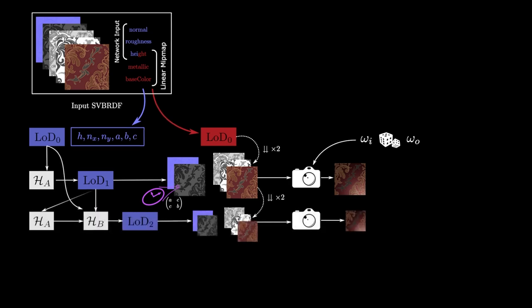The first cascade of networks leverages a second network HB which along with HA provides the downsampling operator for the second level of detail.